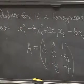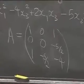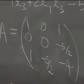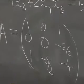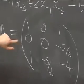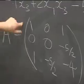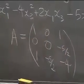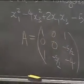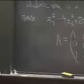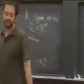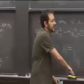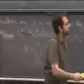For example, if you have x₁² − 4x₃² + 2x₁x₃ − 5x₂x₃, the corresponding symmetric matrix A has diagonal (1, 0, −4), off-diagonal entry (1,3) = 1, and entry (2,3) = −5/2, with symmetric counterparts. This always produces a symmetric matrix.